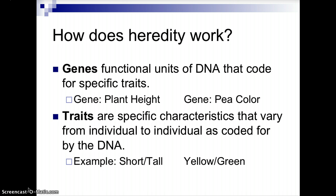Basically, a gene is a functional unit of DNA that codes for a specific trait. DNA is one of four macromolecule groups falling under the nucleic acids — there is DNA, RNA, and ATP. DNA is the important molecule because, as a characteristic of life, all living things are based on that universal genetic code, which is held in the DNA, and that universal genetic code would be coded for in the genes.